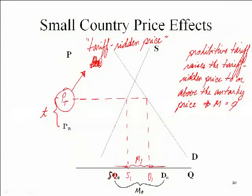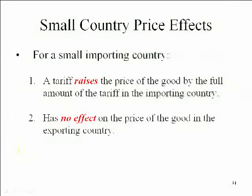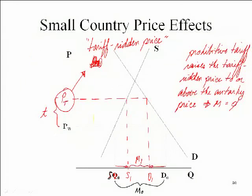A student asks whether transportation costs factor into the tariff. Yes — the world price may or may not include transportation costs, but if it does not, then the actual price faced is slightly higher, and the tariff would be put on top of that. Another student asks: if the tariff raises the price above the autarky price, wouldn't we then have excess supply? Exactly right — the domestic quantity supplied would be greater than domestic quantity demanded, and that would force the domestic price back down to the autarky price.